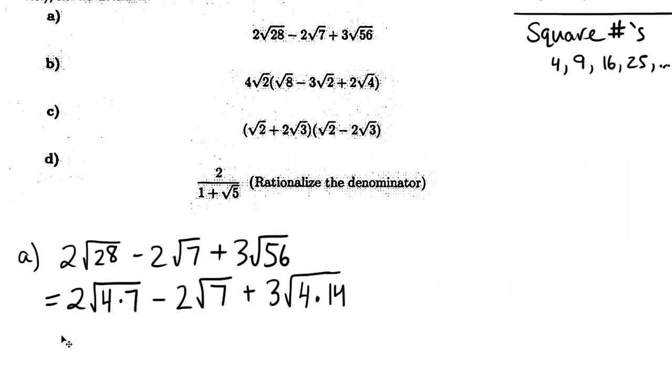So now, the reason we did that is because I can put the root onto each of those, like this. And the point is that root 4 is nice. The root of any of these numbers is nice. The root of 4 is 2, the root of 9 is 3, etc.